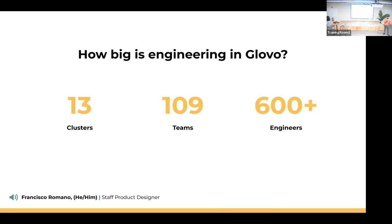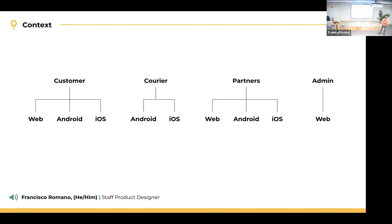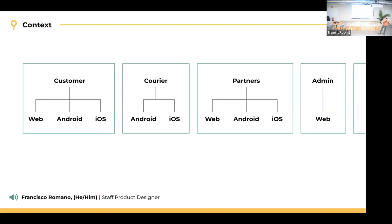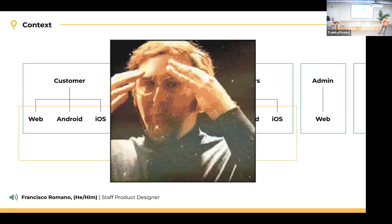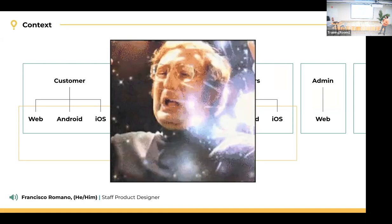With more than 600 engineers, going a bit more into context about design systems: for most people, Global is the customer app — the one you use to order food. But there are other clusters: the courier app, partners, admin, and so on. Each requires web, Android, and iOS applications, and for some cases each has their own design system. This is a mind-blowing, complex situation, and we're working on it. Luckily, today we have two great speakers to explain how we're solving this at Global.